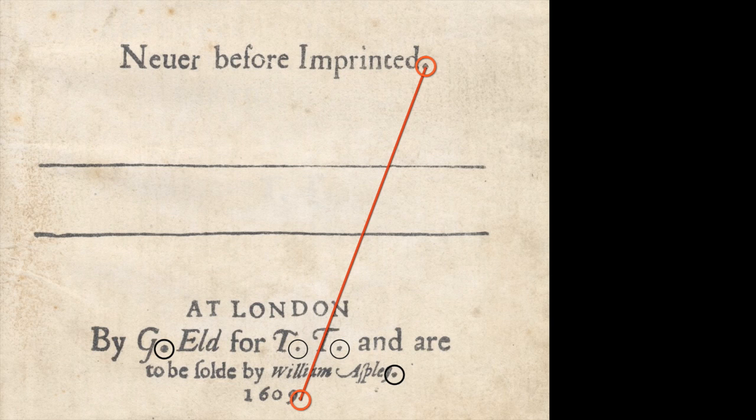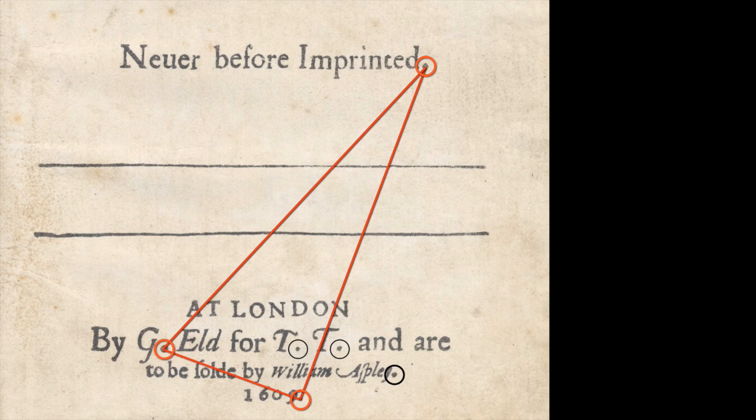Is there any other dot that's drawing attention to itself? Well, yeah, the G dot is only about 10 times the size it's supposed to be, and so let's connect it to the D dot and to the 1609 dot, and we find we have a perfect right-angled triangle.